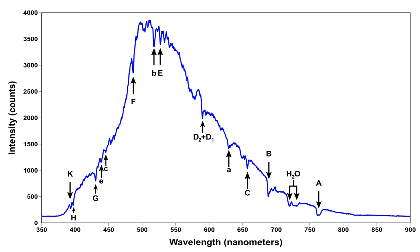A spectral line is a dark or bright line in an otherwise uniform and continuous spectrum, resulting from emission or absorption of light in a narrow frequency range, compared with the nearby frequencies. Spectral lines are often used to identify atoms and molecules.